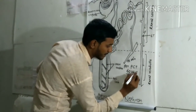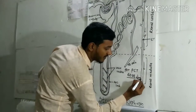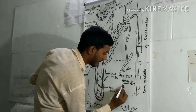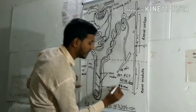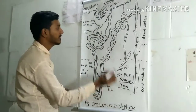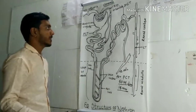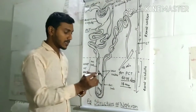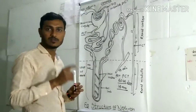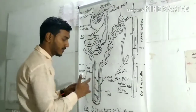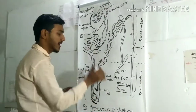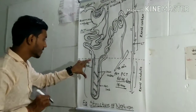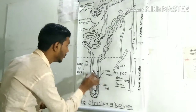For the PCT — proximal convoluted tubule — the diameter is about 60 microns and the length is about 14 to 16 millimeters. The entire length of the nephron is 3 to 6 centimeters, as previously noted. The PCT has a diameter of 60 microns and a length of 16 millimeters, after which it leads to the descending limb — the start of the loop of Henle.